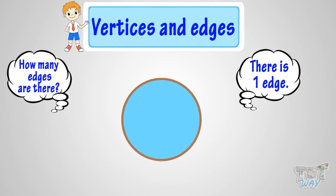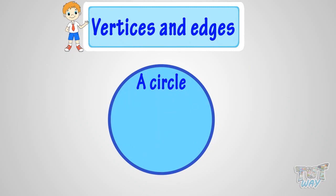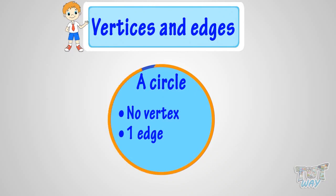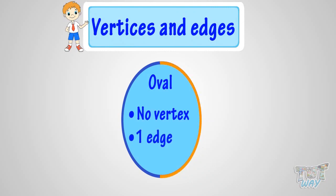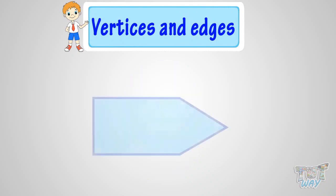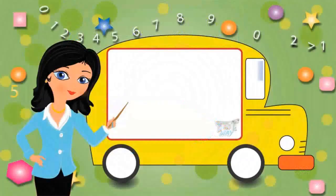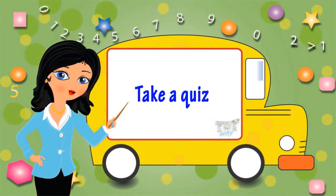So what we learn here? A circle or any round shape has no vertex and only one edge, which is a continuous line that does not end anywhere. An oval is another shape that does not have any vertices and only one edge. So kids, today we learned what are vertices and edges. Now you may go ahead and take a quiz to learn more. Bye-bye.